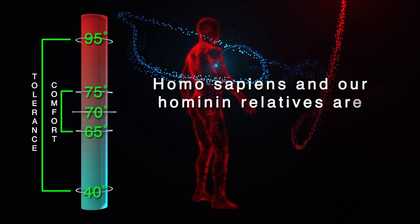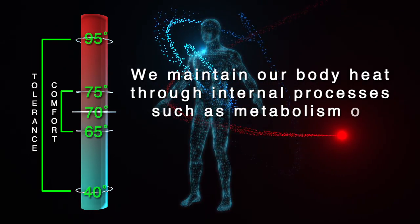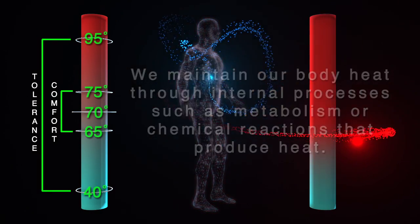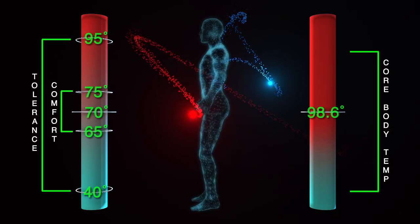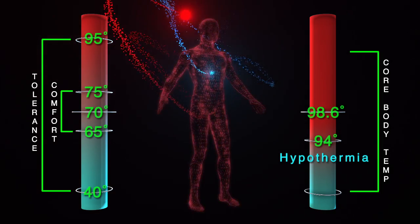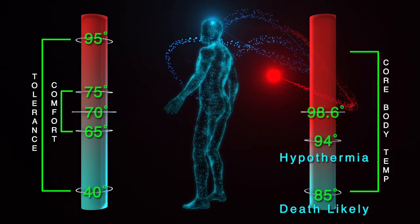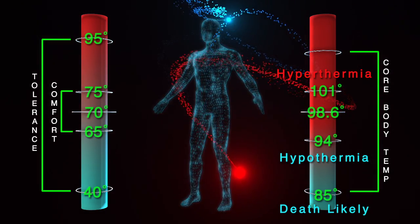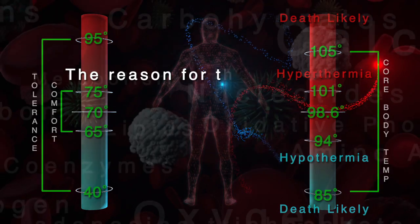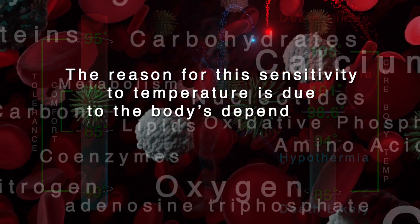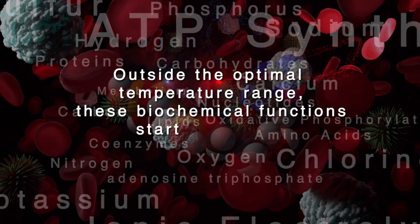Homo sapiens and our hominin relatives are endotherms, or warm-blooded creatures. We maintain our body heat through internal processes such as metabolism — chemical reactions that produce heat. Humans maintain a core body temperature of about 98.6 degrees Fahrenheit or 37 degrees Celsius. If our core temperature falls below 94 degrees, hypothermia begins to set in. Core body temperatures below 85 degrees lead to the body's inability to heat itself and death results. Above 101 degrees hyperthermia sets in. Core body temperatures above 105 degrees can lead to a lethal hyperthermic state. The reason for this sensitivity to temperature is due to the body's dependence on biochemical processes to function. Outside the optimal temperature range, these biochemical functions start to fail and the organism dies.